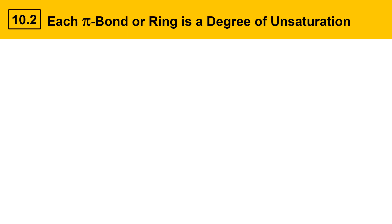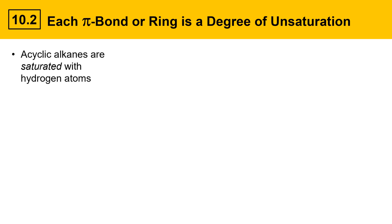Let's take a look at alkanes to start with. Acyclic alkanes are saturated species — they're saturated with hydrogen atoms. In other words, these molecules could not fit any more hydrogens on without breaking carbon-carbon bonds. They have structures with the general formula CnH2n+2.